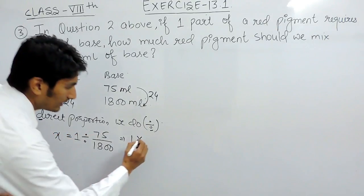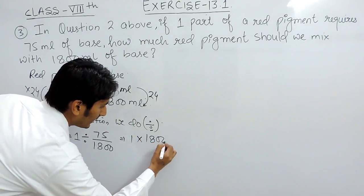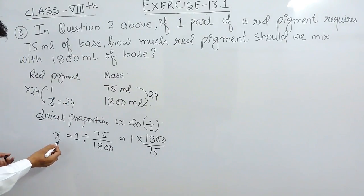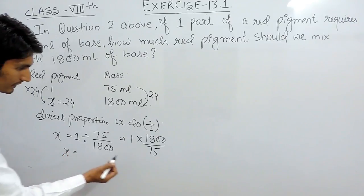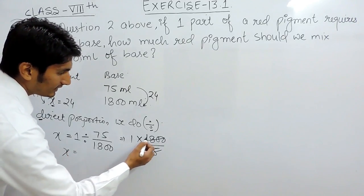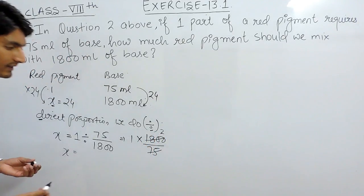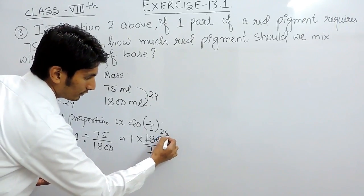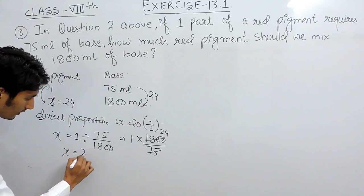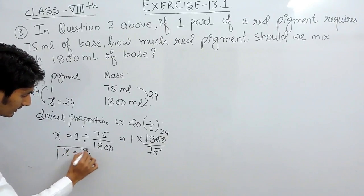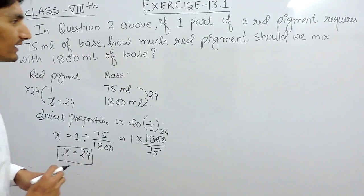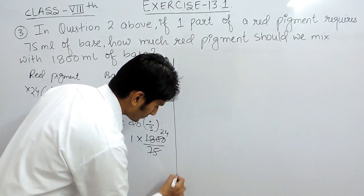According to cross multiplication, we know that whenever we have to convert divide into multiply, on the right hand side the denominator becomes numerator and the numerator becomes denominator. So the value of x must be, cancelling this, 75 into 2 is 150, and this will be 4 times. So the value of x will come 24, same as this.